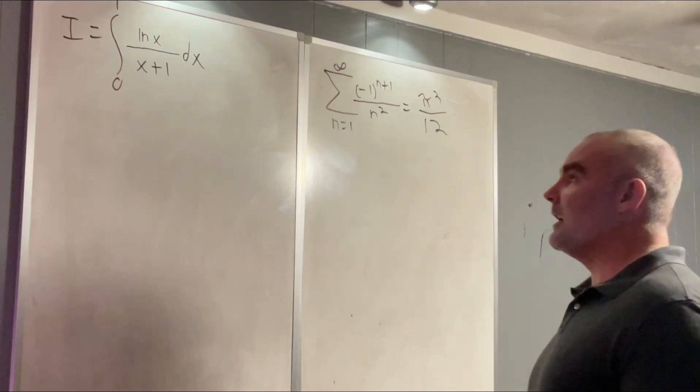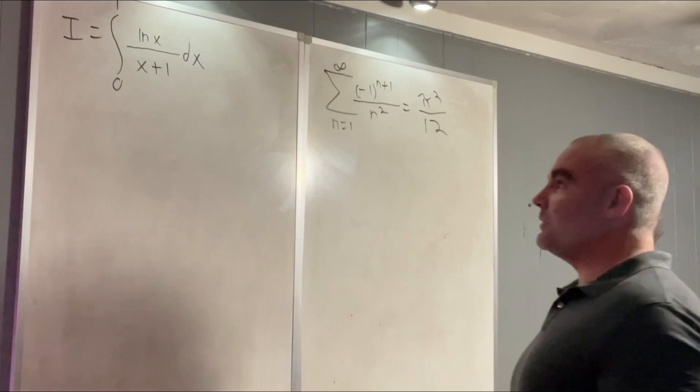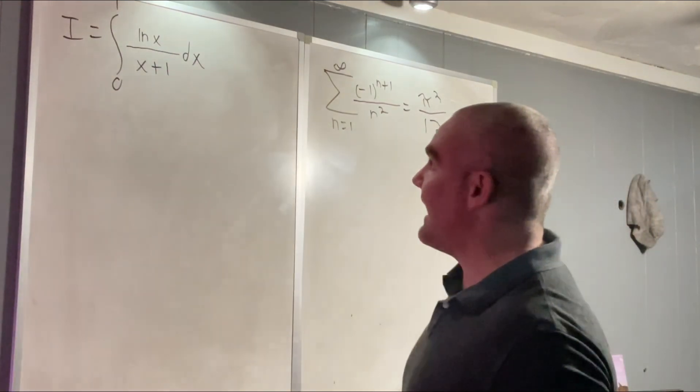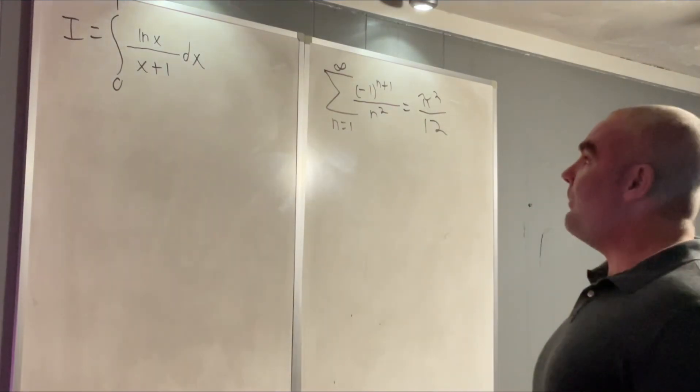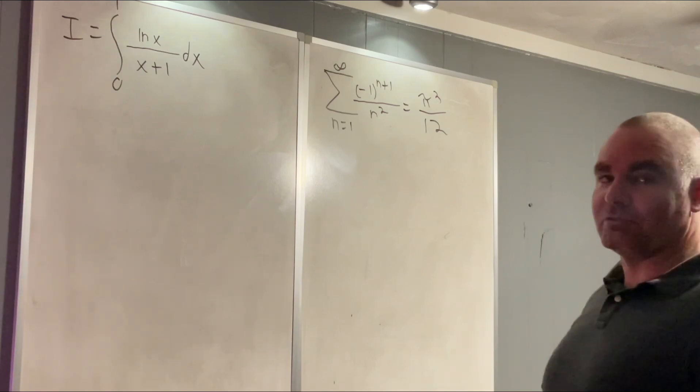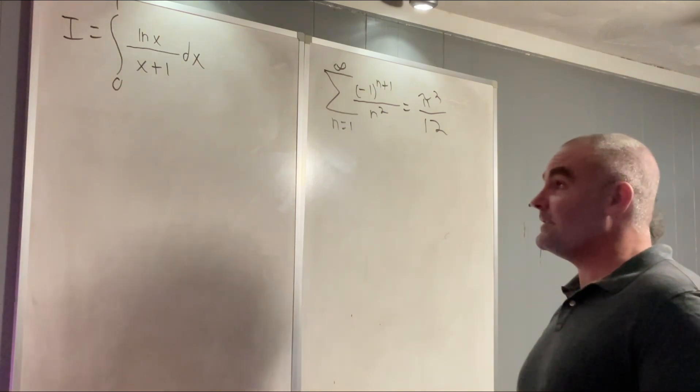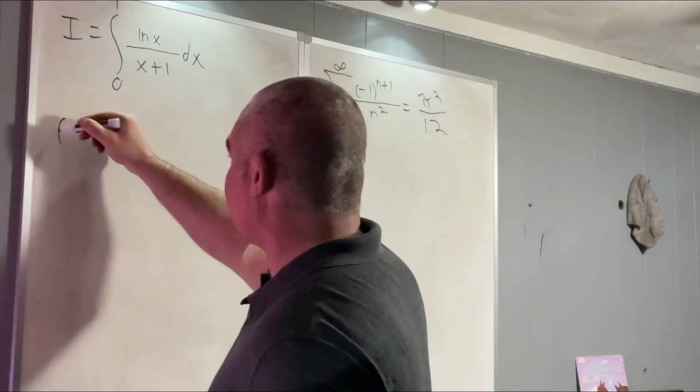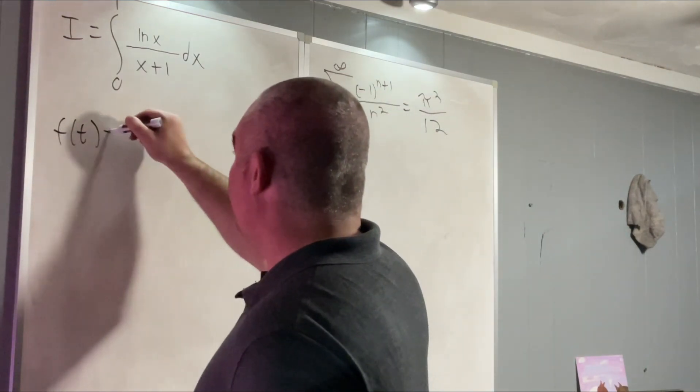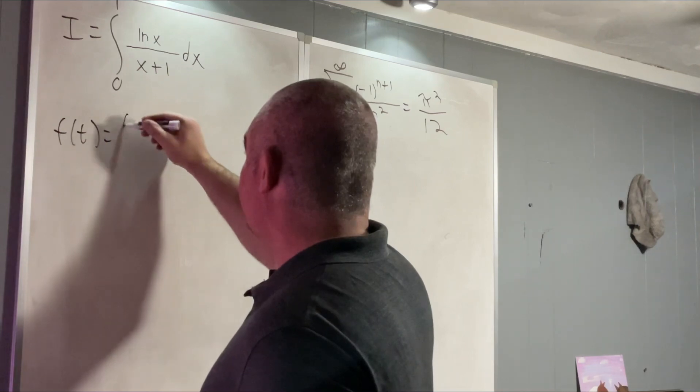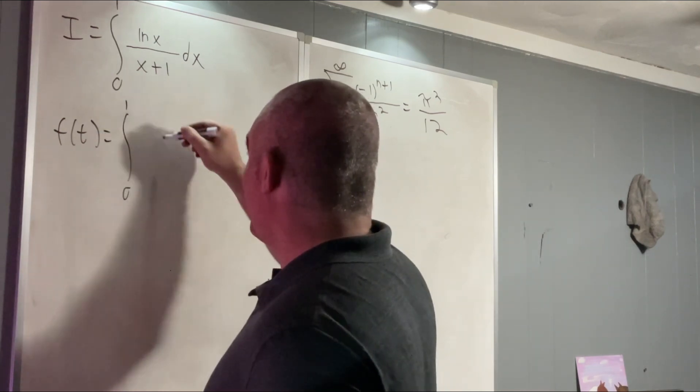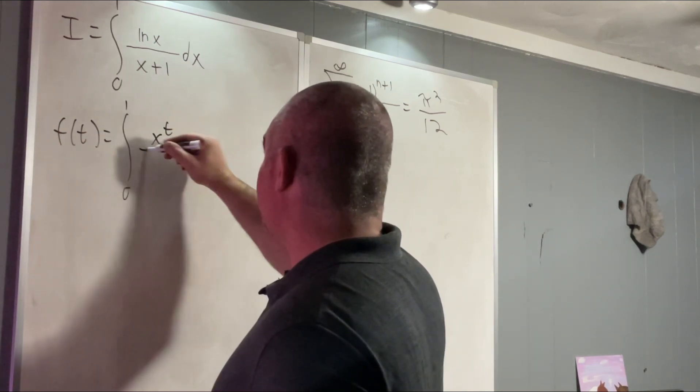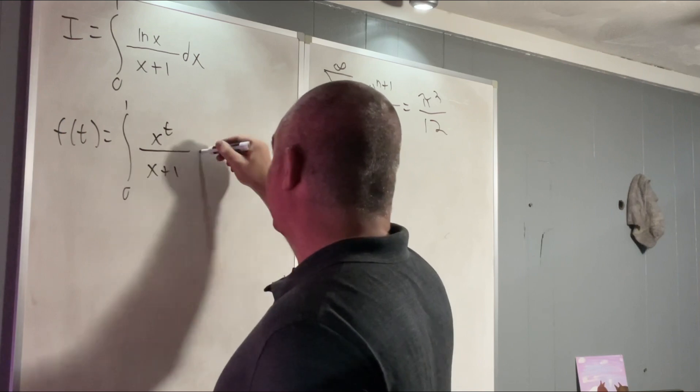Well, recall from some previous videos we were able to recover factors of ln x by taking derivatives, partial derivatives with respect to t of x to the t. That's what we'll do in this case also. So let's go ahead and create a function of t that's equal to the integral from 0 to 1 of x to the t over x plus 1 dx.